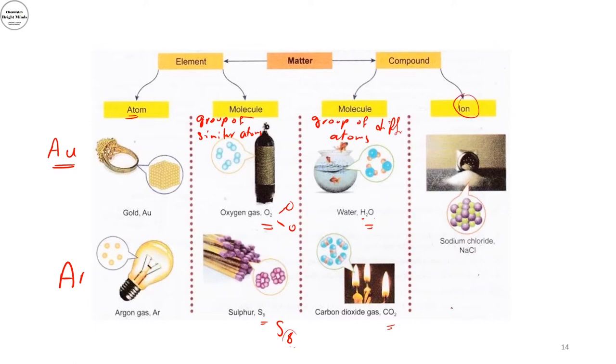Now the compound can also be classified into ions and those ions, example for that the sodium chloride when you dissolve it into water it dissociates into cation which is the sodium ions and anion which is the chlorine ions.